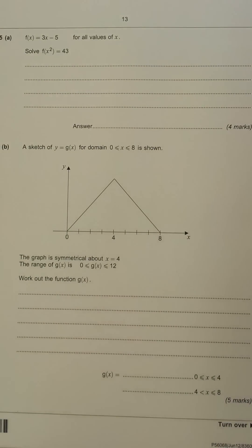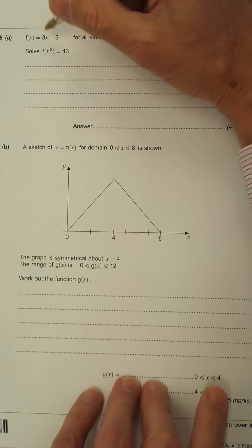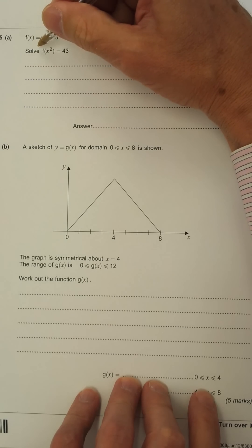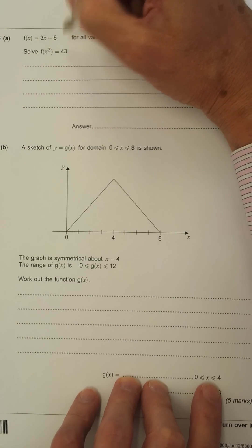OK, question 15 is about functions and range and domain. Here we have a function. Function of x is 3x minus 5 for all values of x. Solve f of x squared equals 43.